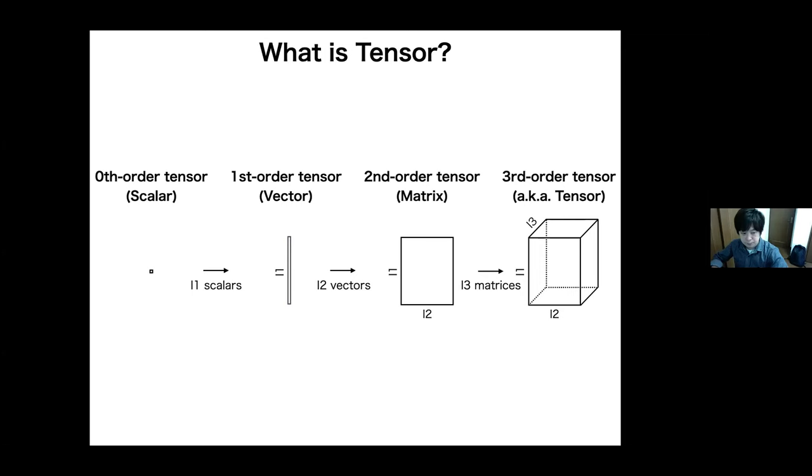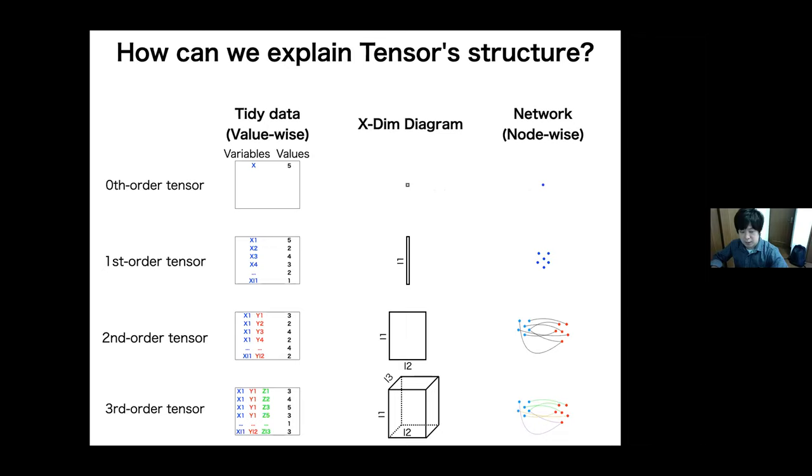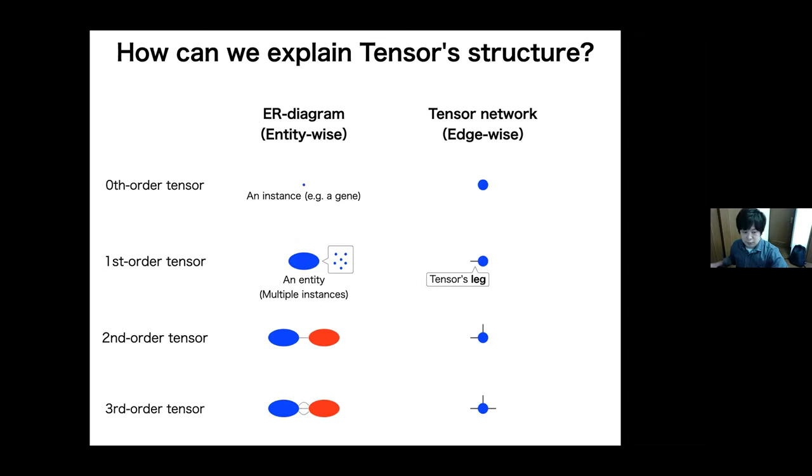We can explain the tensor structure in many ways. For example, in tidy data, the ascending order can be explained by the number of columns. In the network, third-order tensor can be explained with different colored edges. In ER diagram, the third-order tensor can be explained with entities with multiple edges. In tensor network, which is a special way to explain a tensor, the order is explained by the number of edges, and the edges are also called tensor's legs.